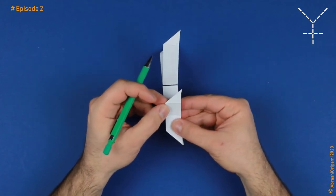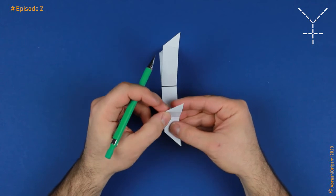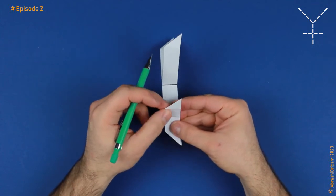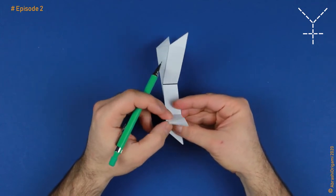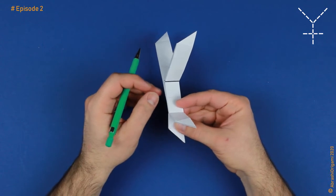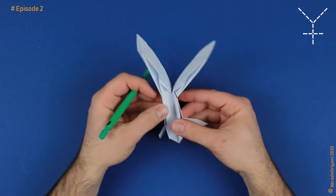We can also examine the hinge creases of yet another flap. For example, this one. It also can rotate around its hinge creases. You see how it rotates around these lines. Quite simple. I hope you're gaining a better understanding of the hinge crease concept.